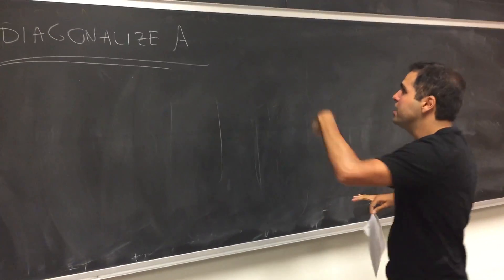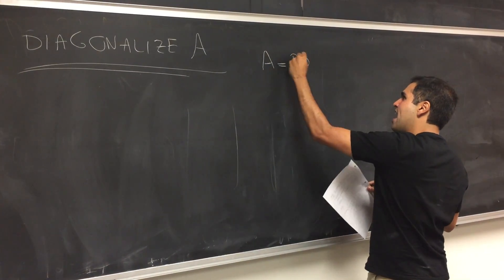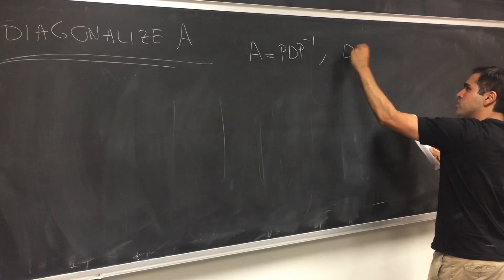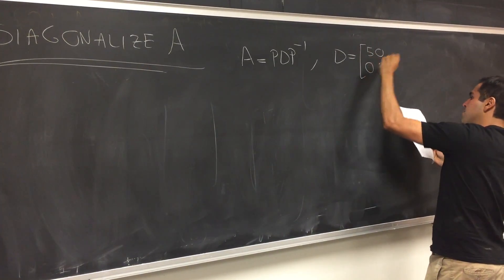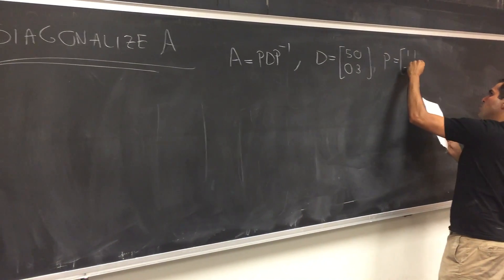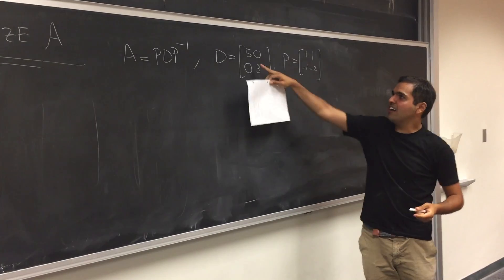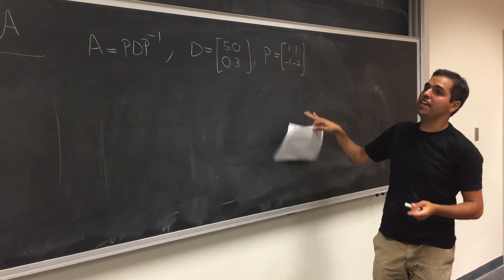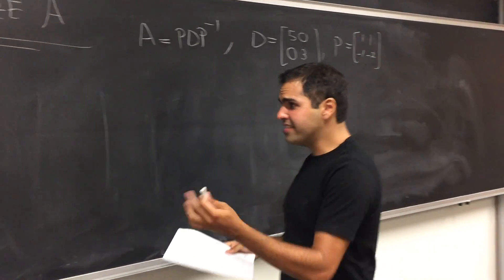Using linear algebra, you can write A as P·D·P inverse, where D is [5, 0; 0, 3] and P is [1, 1; -1, -2]. Here D is the diagonal matrix of eigenvalues, and P is the matrix of eigenvectors.